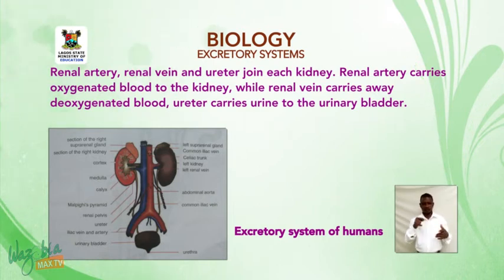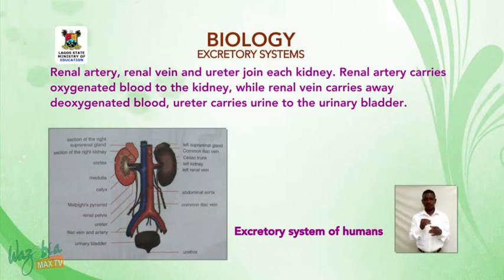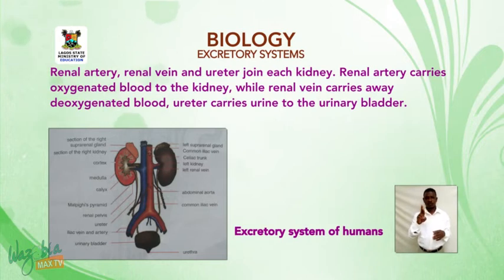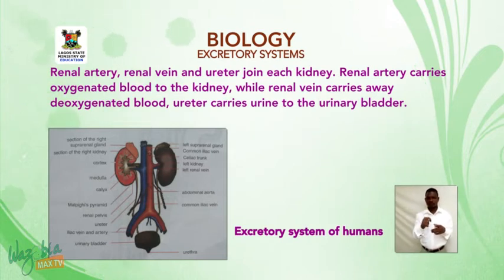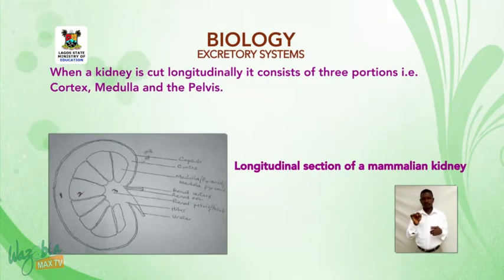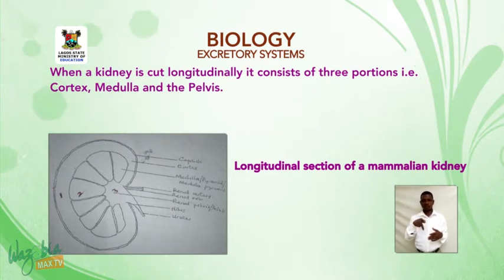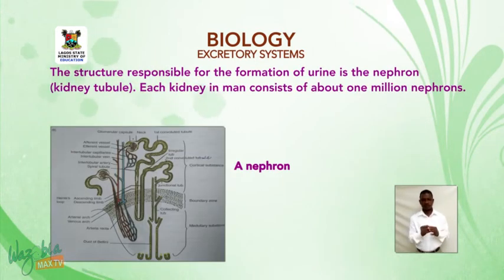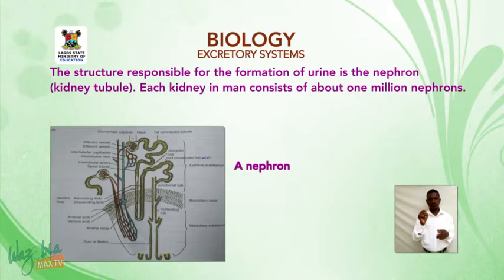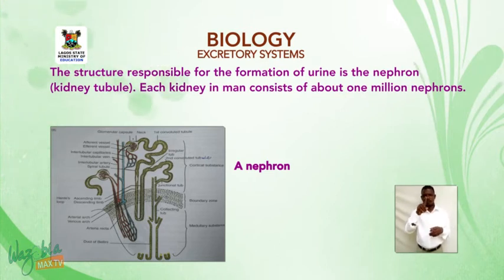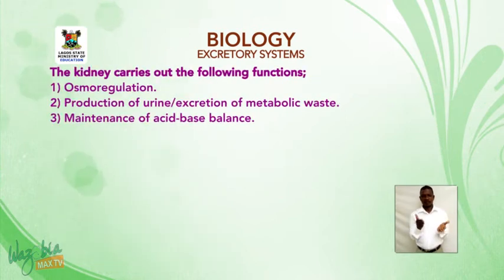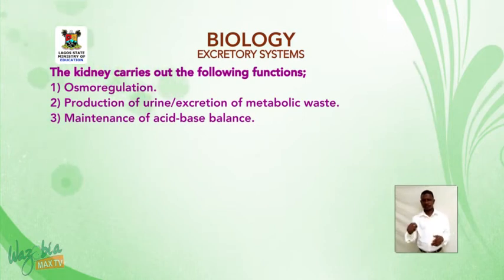The renal artery, renal vein, and ureter join each kidney. When a kidney is cut longitudinally it consists of three portions: cortex, medulla, and pelvis. The structure responsible for the formation of urine is the nephron. Each kidney in humans consists of about one million nephrons.